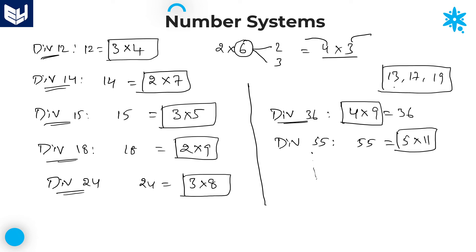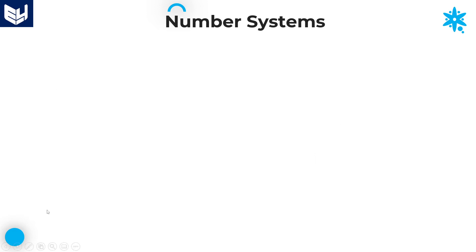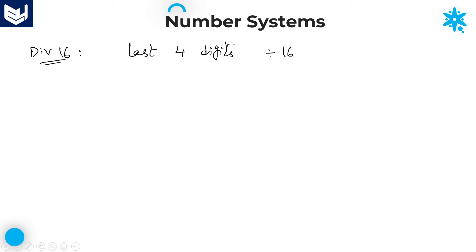See the divisibility rule of 16. If any number is divisible by 16, then its last 4 digits must be divisible by 16. That is the divisibility rule of 16. I will tell you one small example regarding this.